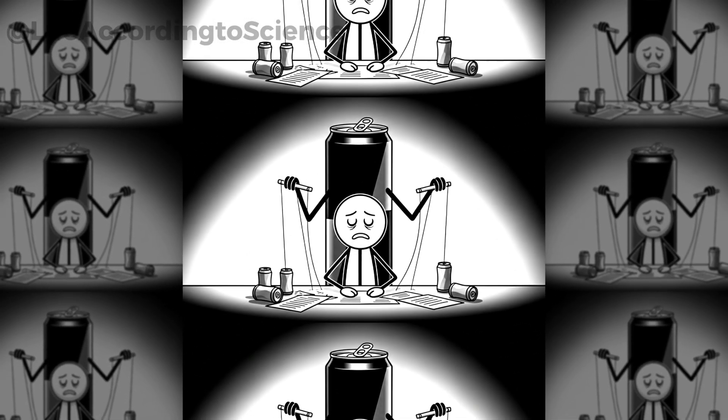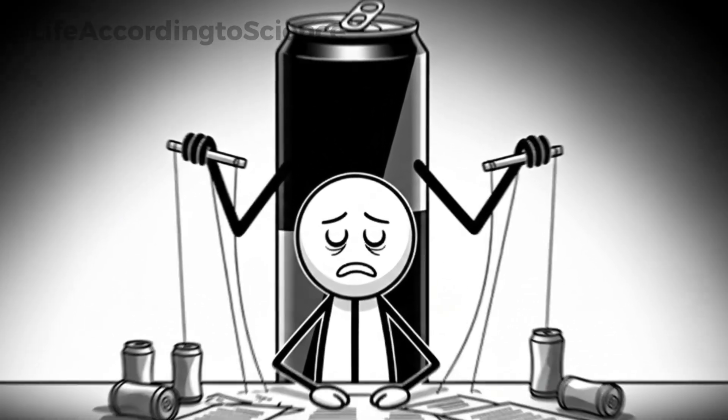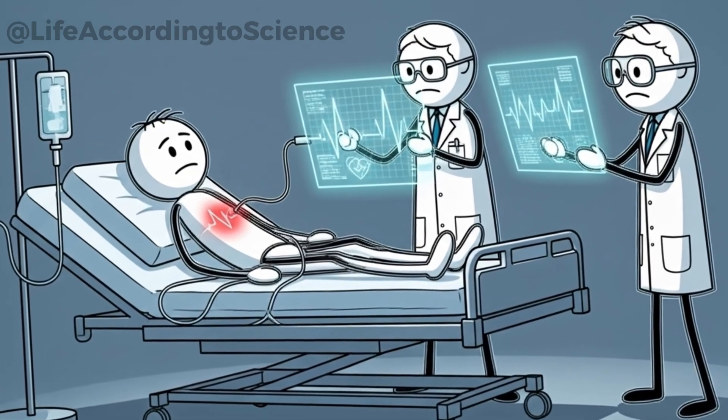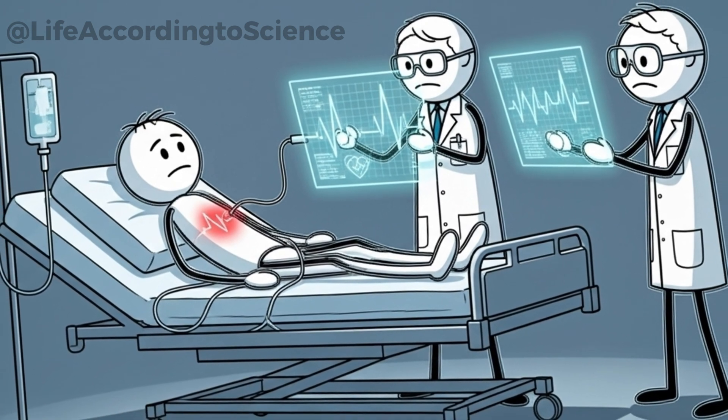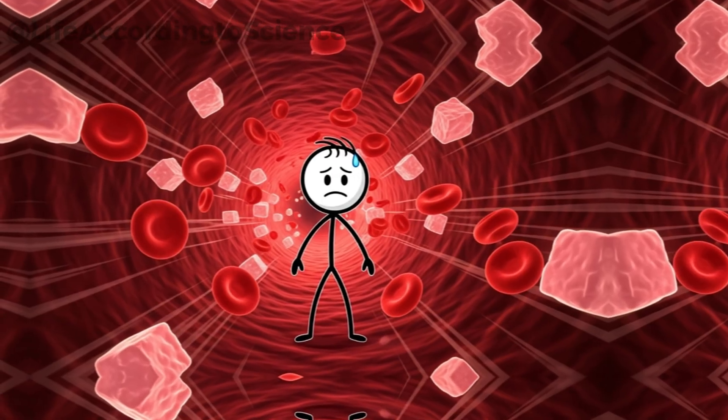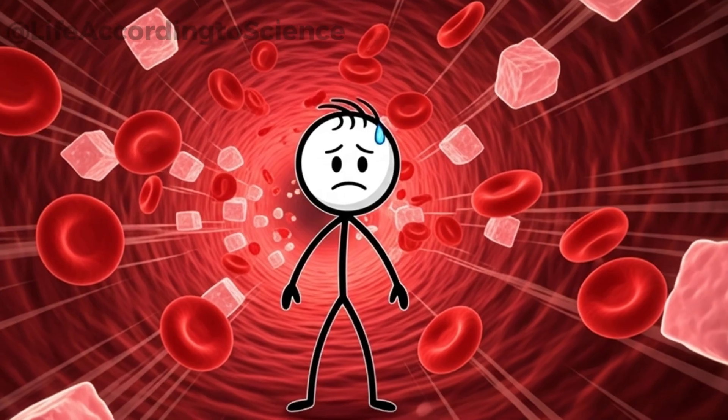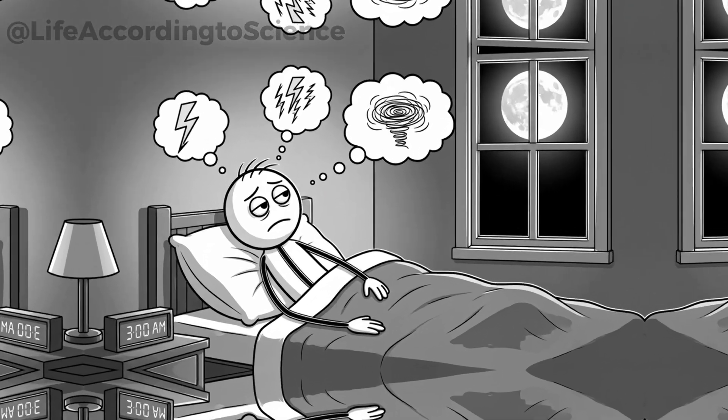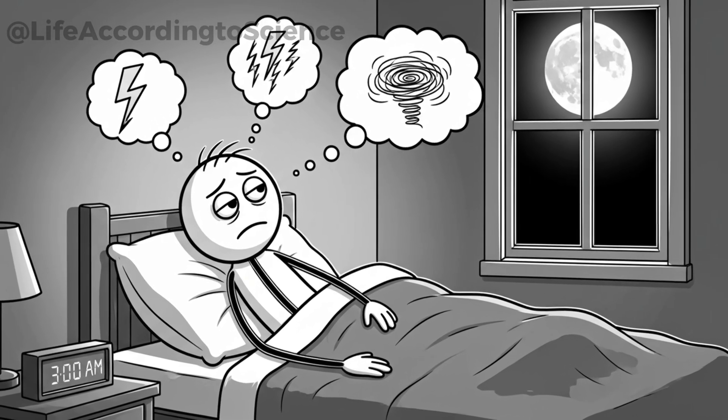Scientific studies have put energy drinks under the microscope, especially when consumed regularly. Researchers have found that after 30 days of daily use, subjects often show elevated blood pressure, increased heart rate, and markers of stress on the cardiovascular system. Blood tests sometimes reveal higher levels of glucose and triglycerides, which are linked to metabolic issues like diabetes and heart disease.